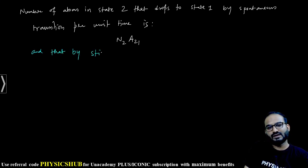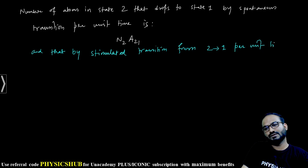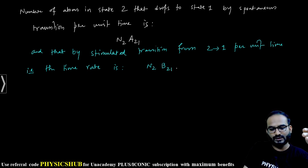And whenever we talk about stimulated transition from 2 to 1 per unit time, the time rate is N2 B21 u(ν). Stimulated means B is coming, and in the stimulated case you need some external influence, so u(ν) will also be multiplied.